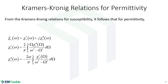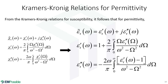The susceptibility and permittivity are almost the same thing — adding one to the susceptibility gives the permittivity. So in fact, we can write the Kramers-Kronig relation for the complex permittivity, relating the real and imaginary parts of that.